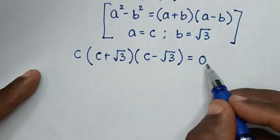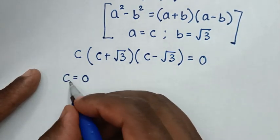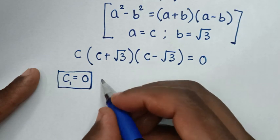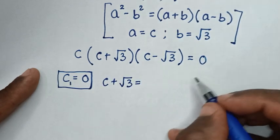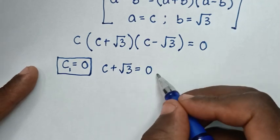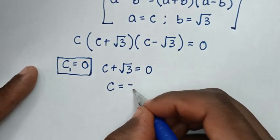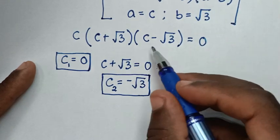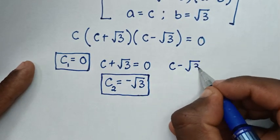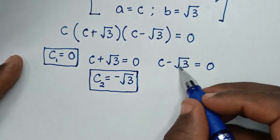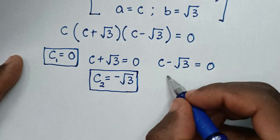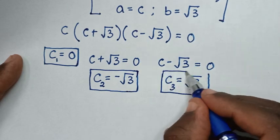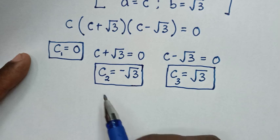From here we have three solutions. The first solution is c equals zero, which we already knew by inspection. The second solution comes from c plus √3 equals zero, giving c equals negative √3. The third solution comes from c minus √3 equals zero, giving c equals positive √3. So apart from zero, we have negative √3 and positive √3.